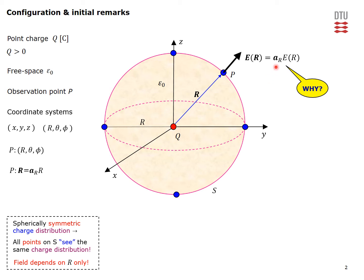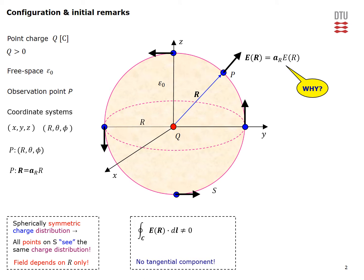Now why is the field radial? Why do we only have this particular component of the electric field? Could we have a tangential component — one tangential to the surface we introduced? Due to the spherical symmetry, if we have that tangential component at one position, we would also have it at other positions, implying a circulation of the electric field along a closed path C. That means the circulation would not be equal to zero, but this is not in accordance with the fundamental law that states the circulation of any electrostatic field along any closed path C is always equal to zero. Thus there cannot be any tangential component.